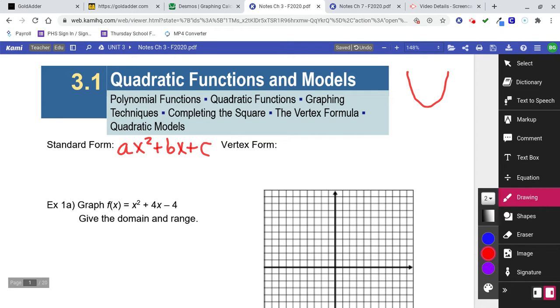And the other form, vertex form, looks like this: a times the quantity x minus h squared plus k.